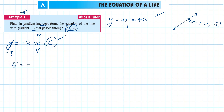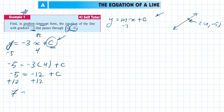Negative 5 equals negative 3 times 4 plus c, so negative 5 equals negative 12 plus c. Add 12 to both sides: 7 equals c. Finally, write the equation: y equals negative 3x plus 7, where c equals 7. That's the solution — simple as that.